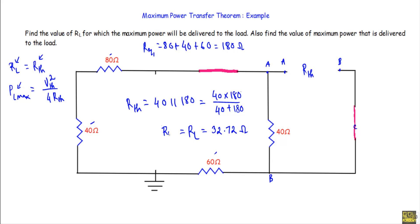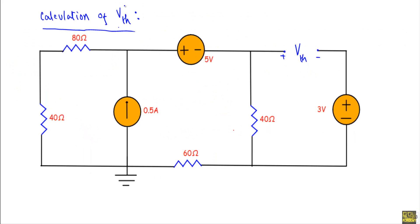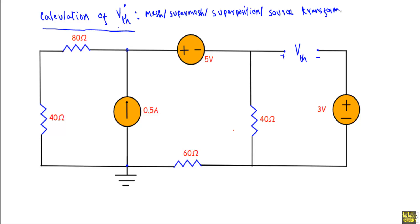So if the value of load resistor R_L is equal to 32.72 ohm, it will receive maximum power from the network. After that, we will calculate V_th across the two terminals. We could use mesh analysis, super mesh, or superposition theorem, but what I can see is that if we use the Source Transformation Theorem in the circuit, that will make our circuit analysis a lot more easier.